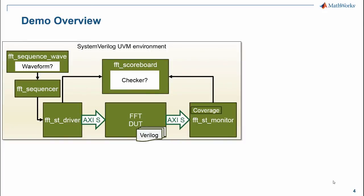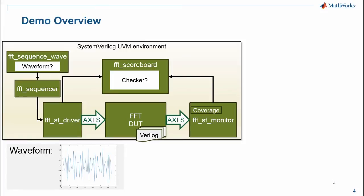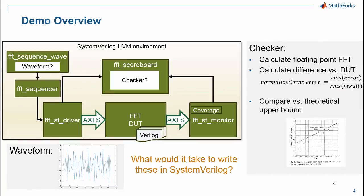This demo will show how all this works from MATLAB. The design under test is an FFT connected to a UVM verification environment via AXI streaming virtual interfaces. The FFT is a complex design — about 10,000 lines of Verilog code. We need to generate a waveform for an input stimulus and write a checker model that takes the input stimulus, calculates the floating point FFT result, and compares the difference between that and the fixed point hardware design, checking that the difference is within our tolerance. Writing these from scratch in SystemVerilog would take many weeks of manual effort.